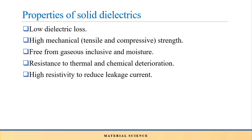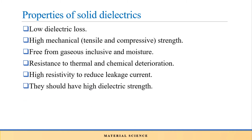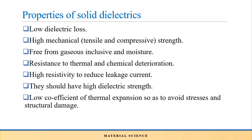Next property is high resistivity to reduce leakage current. If insulating material is provided over a conducting part, there is some leakage current flowing radially outward, and the function of the insulating material is to suppress that leakage current. Next, they should have high dielectric strength. After that, a low coefficient of thermal expansion so as to avoid stresses and structural damage.